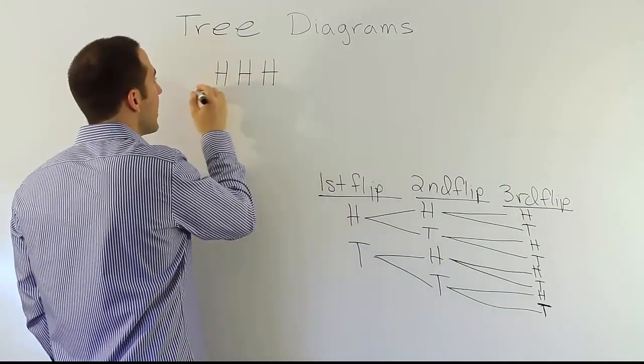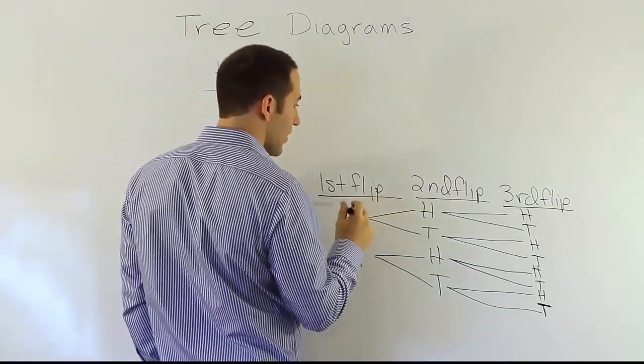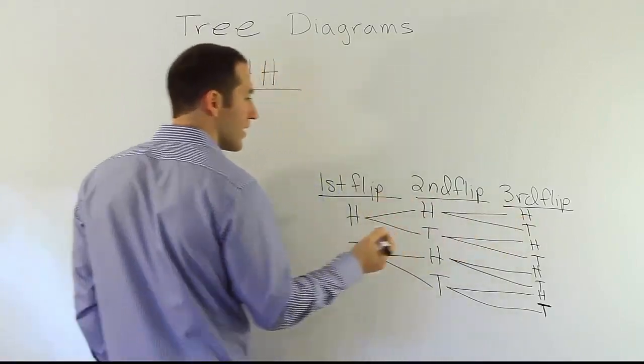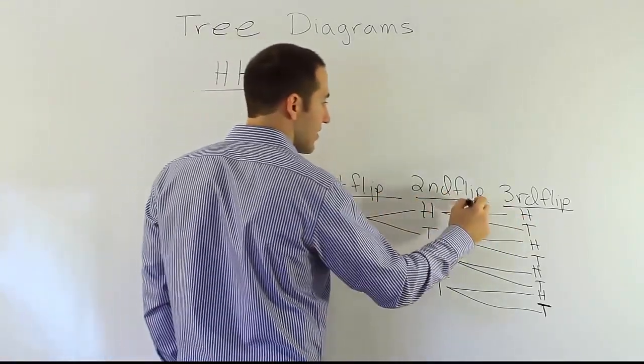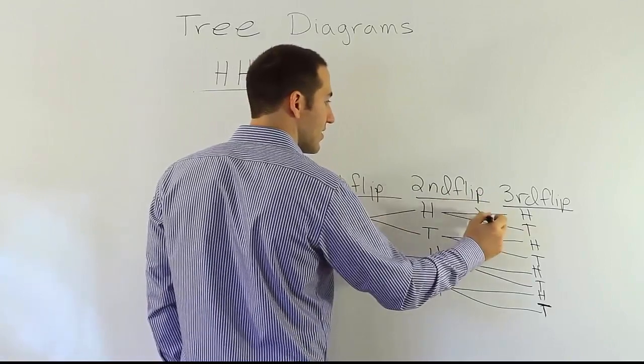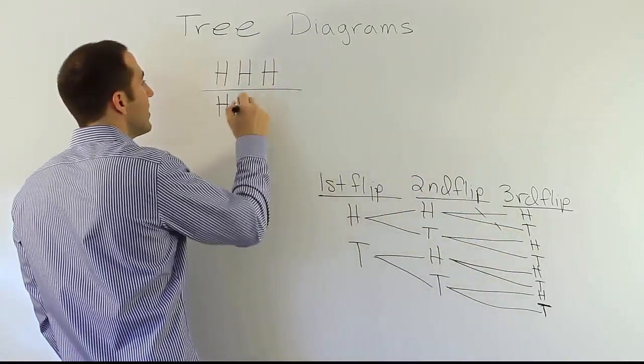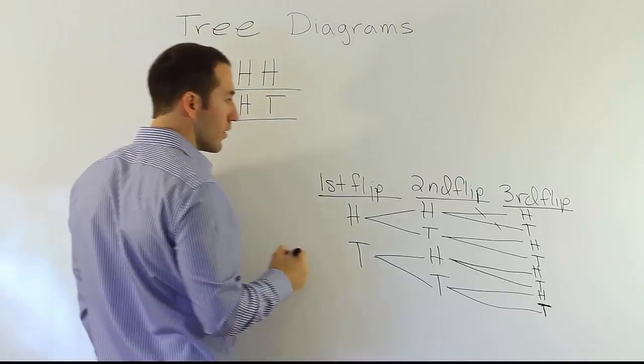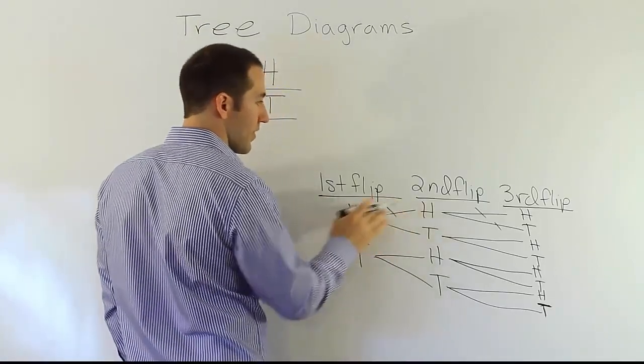So if I flip it three times, I could get all heads. Then I could go heads, heads, tails, so I'm just following each of the branches. I'm going to do heads, heads, heads, then I'll do heads, heads, tails. So heads, heads, tails. Then I can go, so this is all used up. This path.